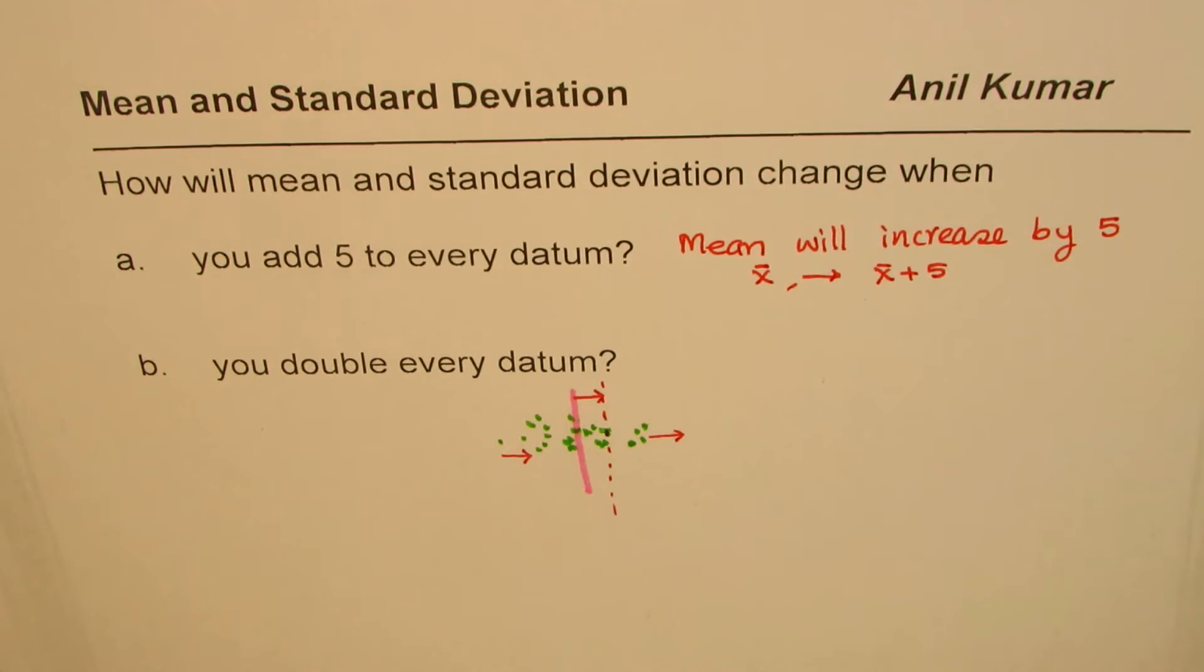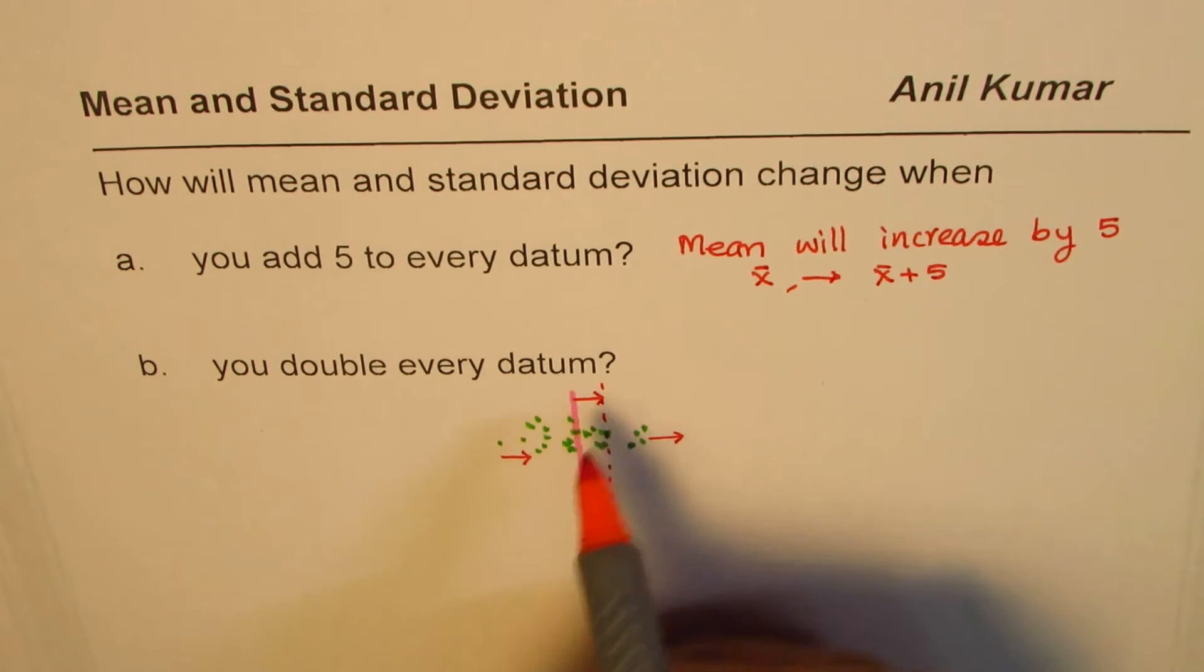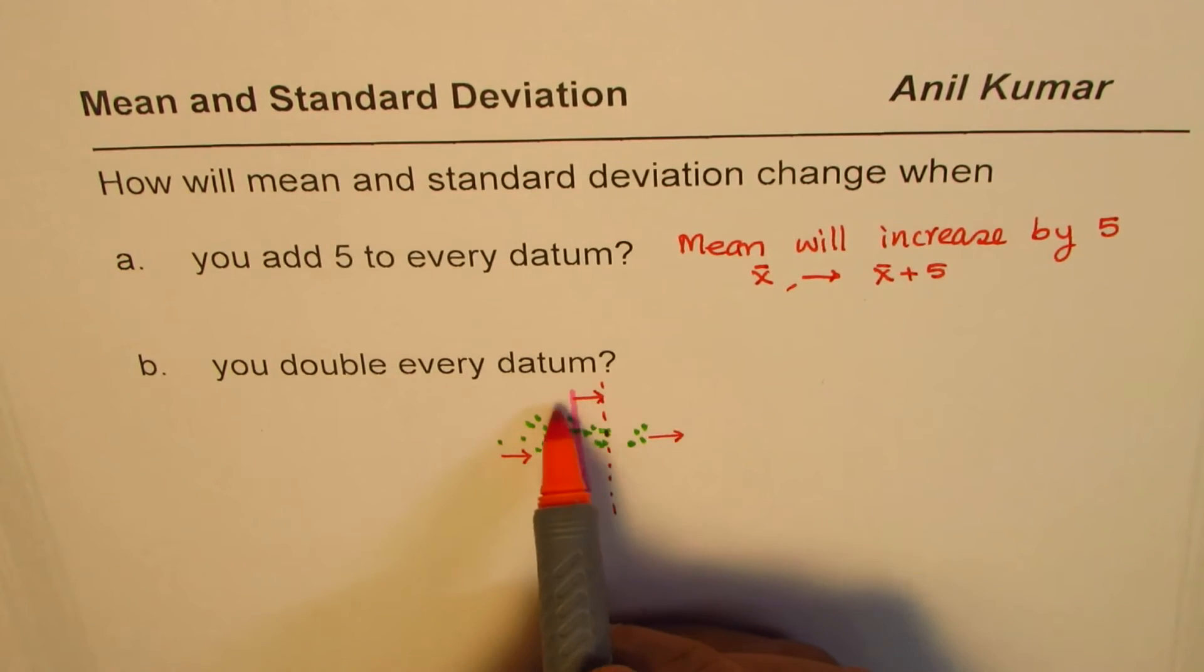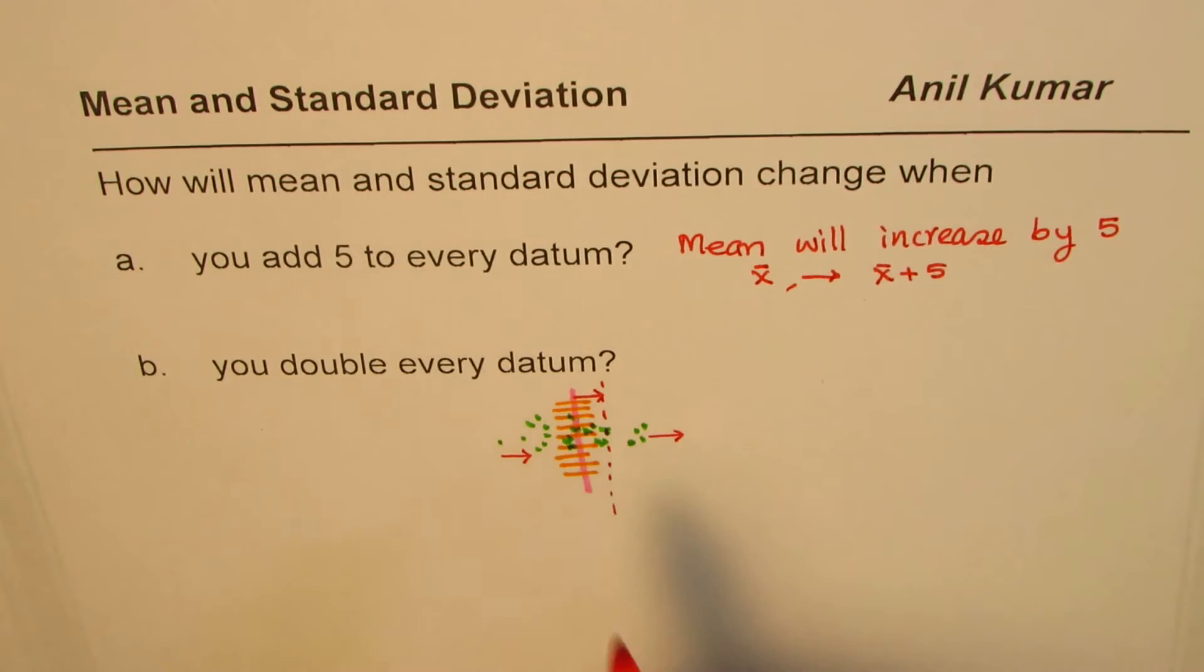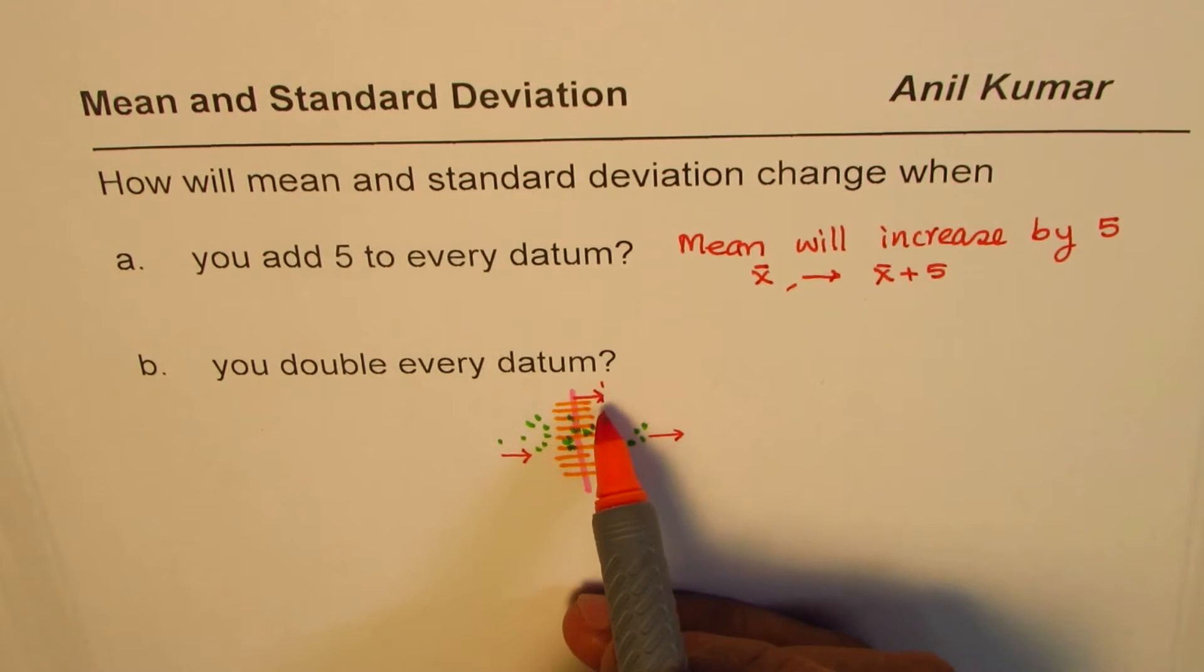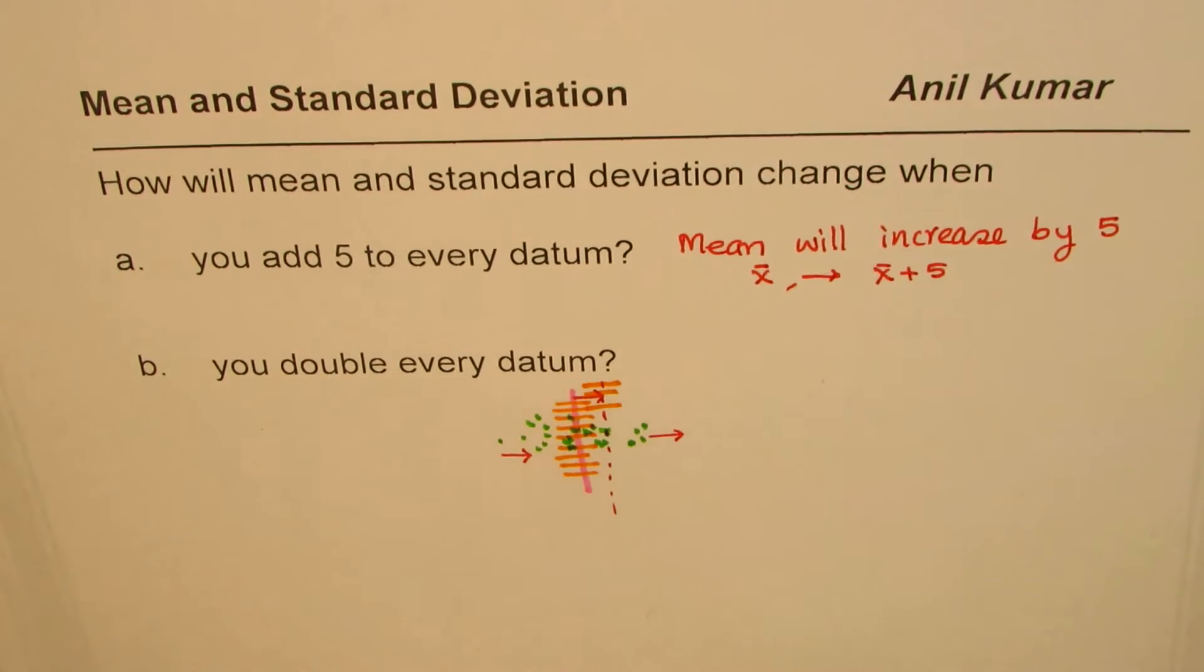Now what happens to standard deviation? Let us see what standard deviation is. Standard deviation tells you how far the data is spread from the mean. It could be, let's say, a couple of units from the mean - how much away you are from the mean for the majority of the data. So in this case, if you shift the mean, then relatively the change in position or the deviation from the mean still remains the same.